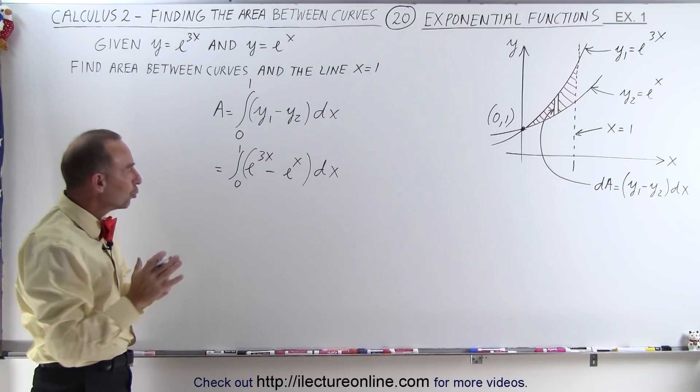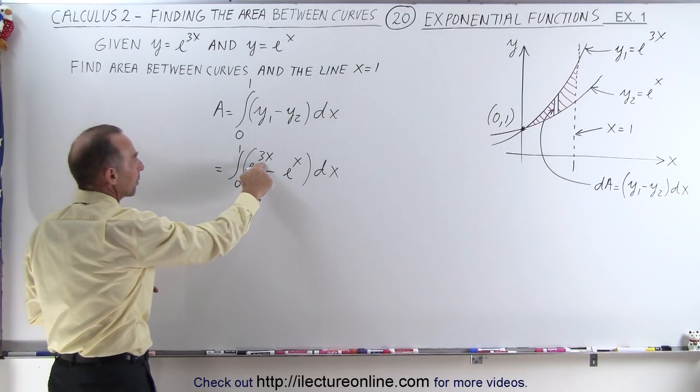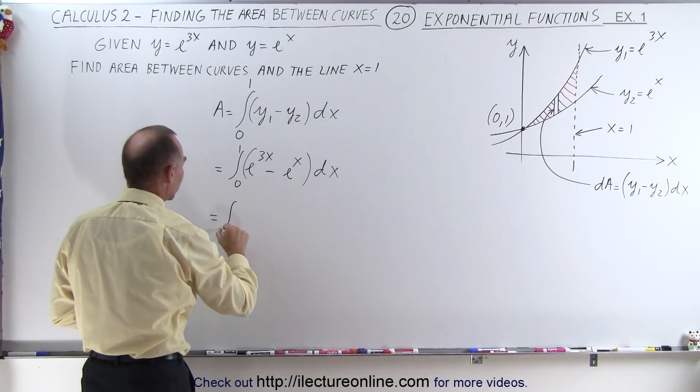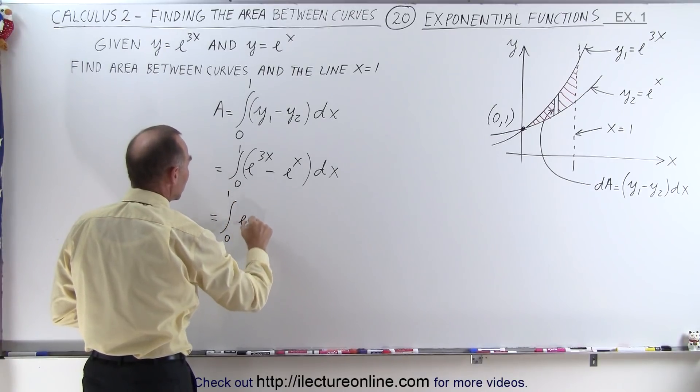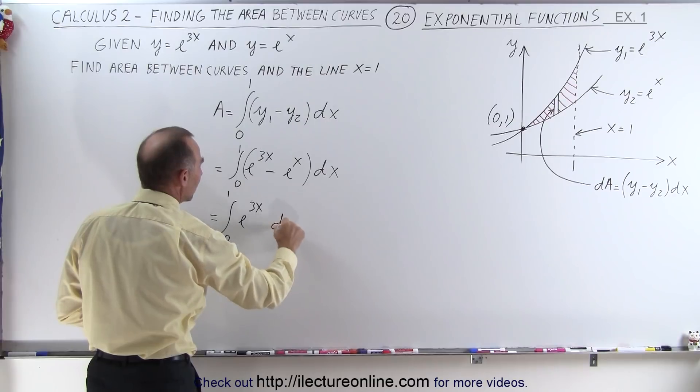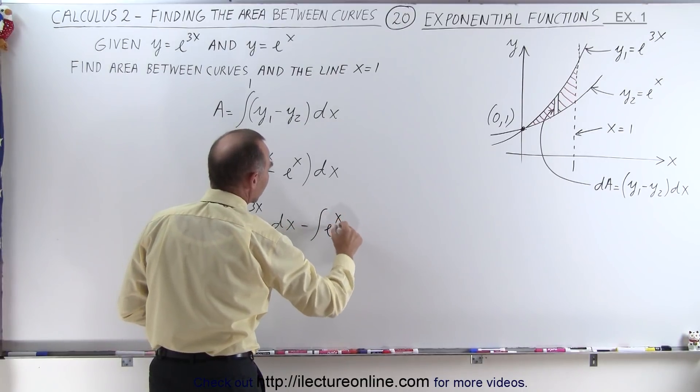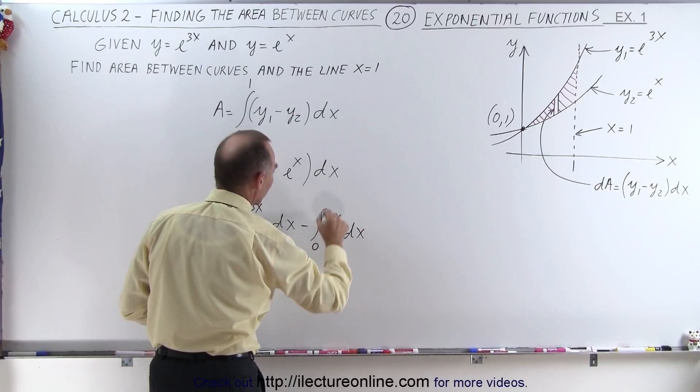I think we want to split that up into two separate integrals because the exponential here being 3x, we need the proper differential. So this is equal to the integral from 0 to 1 of e to the 3x times dx, and then minus the integral of e to the x times dx with the same limits from 0 to 1.